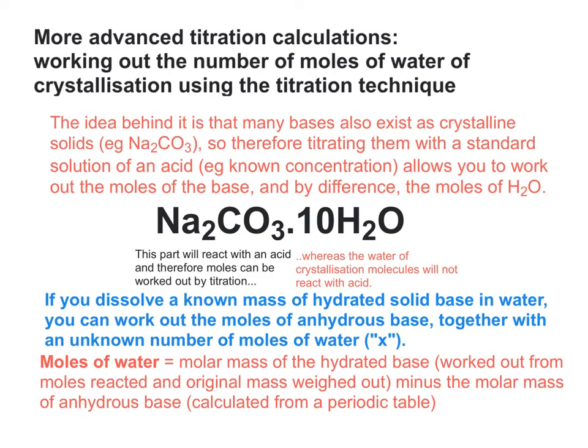The key to doing this is to realise that the molar mass of the hydrated base, so in this case the whole thing in front of you, your Na2CO3.10H2O, can be worked out from the moles that you have found that react in a titration, and the original mass that you weighed out. Moles equals mass over MR, so that can be rearranged.